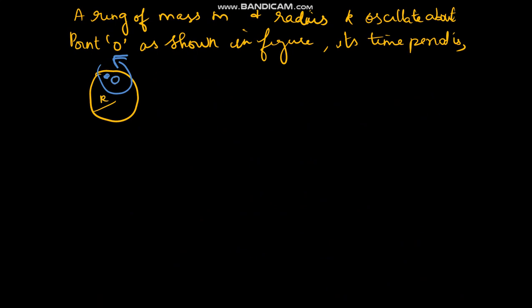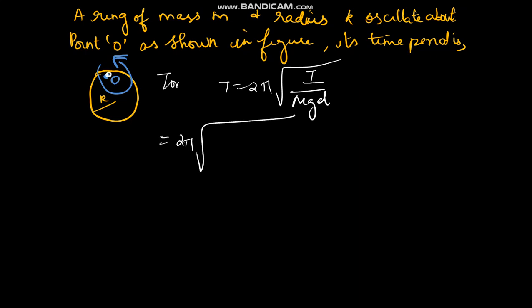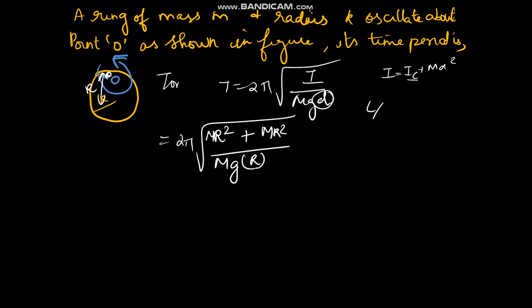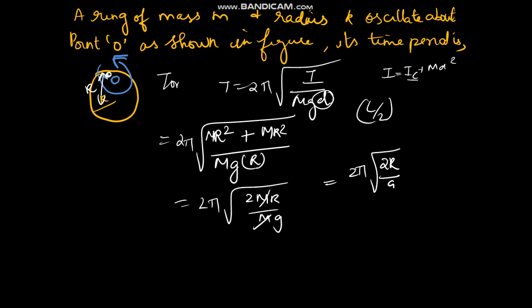Numerical: A ring of mass m and radius R oscillates about point O. T = 2π√(I_O/mgR). Using the parallel axis theorem: I_O = I_cm + mR² = mR² + mR² = 2mR². So T = 2π√(2mR²/mgR). The m terms cancel, giving T = 2π√(2R/g). This is the time period for the torsional pendulum with a ring.